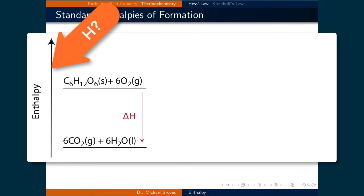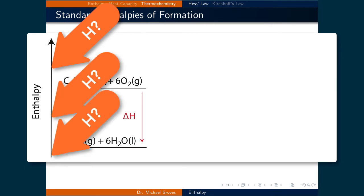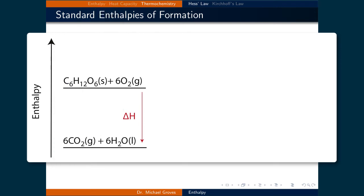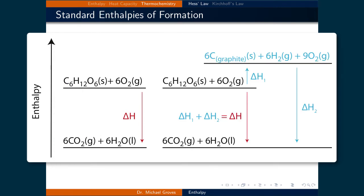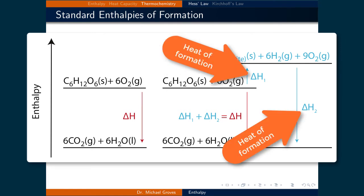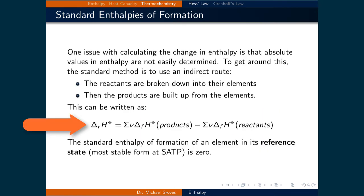One issue with calculating the change in enthalpy is that absolute values in enthalpy are not easily determined. To get around this, the standard method is to use an indirect route. We calculate the change in enthalpy by setting the value of the elemental components to be zero. So the reactants are then broken down into their elemental components and the products are then built up from the elements. The change in enthalpy from breaking down and building up components from their elements is called the standard heat of formation.